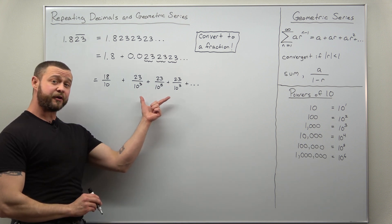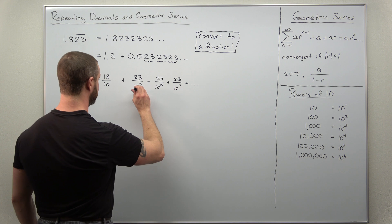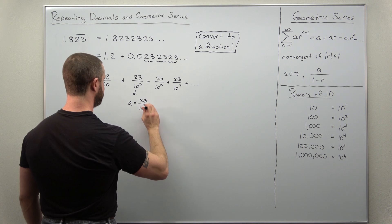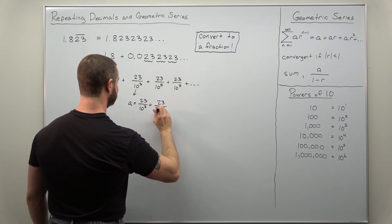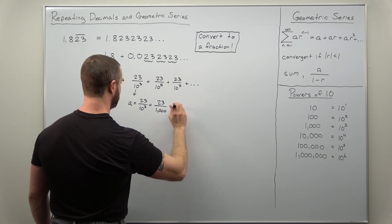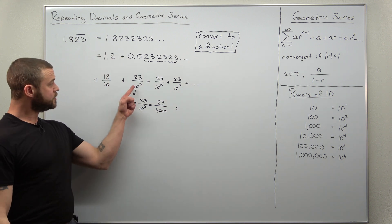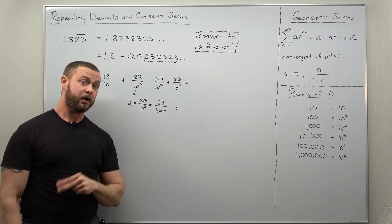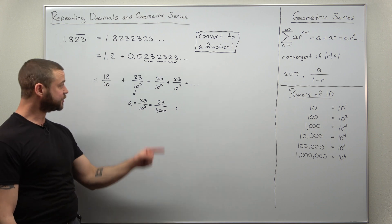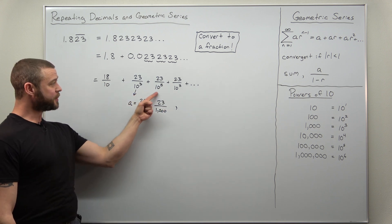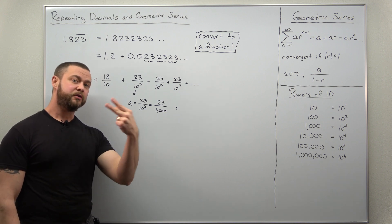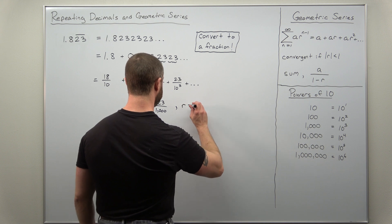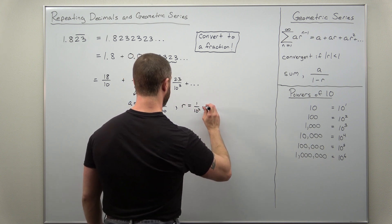This is a geometric series where we have our first term A as 23 over 10 cubed, which we're writing as 23 over 1,000. Notice going from each term to the next one, we're multiplying by 1 over 100, that is 1 over 10 squared. In the denominator, each power of 10 increases by 2 from each term to the next, so our value for R is 1 over 10 squared, or 1 over 100.